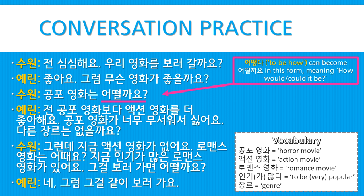다른 장르는 없을까요? — Would there not be another genre? 그런데 지금 액션 영화가 없어요 — But now there are no action movies. 로맨스 영화는 어때요? — How about a romance movie? 지금 인기가 많은 로맨스 영화가 있어요 — Now there is a very popular romance movie. 그걸 보러 가면 어떨까요? — How would it be if we go to see that? 네, 그럼 그걸 같이 보러 가요 — Okay, then let's go see that together.